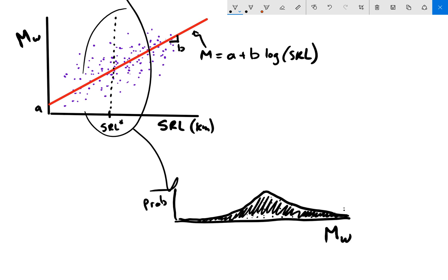What this tells us is that for this particular surface rupture length, this magnitude right here is the most likely magnitude we would see with this fault's surface rupture length according to the data. If this is a normal distribution, this would be the mean and also the median. We often refer to this as the 50th percentile.